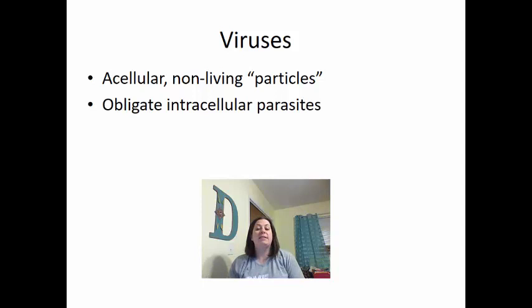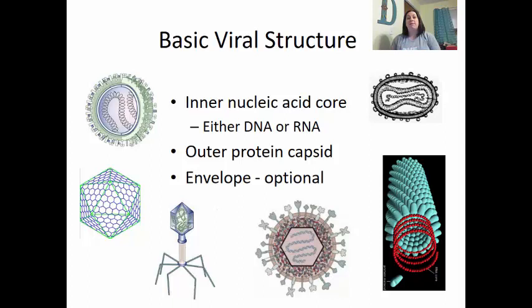Let's look at some basic viral structures. A virus is always going to have an internal nucleic acid core. This nucleic acid core could either be DNA or RNA — it could be double-stranded DNA, double-stranded RNA, single-stranded DNA, or single-stranded RNA. It has lots of variations, but one thing to note is that it only has one type. It does not have both DNA and RNA.